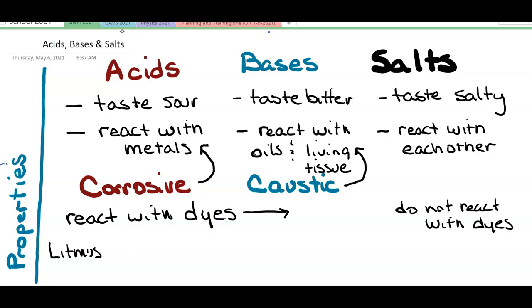And acids tend to turn litmus dye red, where the bases tend to turn litmus dye blue. And salts don't do anything. Litmus just stays as it is.